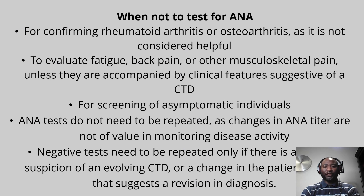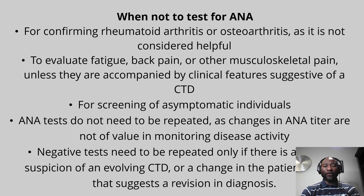Before completing this lecture, it is important to talk about when not to test for ANAs. Do not check for ANAs when you have confirmed a diagnosis of rheumatoid arthritis or osteoarthritis. The diagnosis of rheumatoid arthritis is clinical — you can do rheumatoid factor or anti-cyclic citrullinated peptide antibodies to determine prognosis, but certainly do not do ANAs. Do not do an ANA to evaluate fatigue, back pain, or musculoskeletal pain that is unclear, especially in individuals without features suggestive of connective tissue disease. Do not do it for asymptomatic individuals. ANAs generally do not need to be repeated if done once with a low titer, as they generally do not change within 12 months. If they are negative and you suspect evolving disease, they can be rechecked after three to six months.